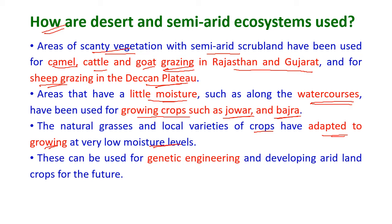This condition — where local grasses and crops grow at very low moisture levels — can be used for genetic engineering to develop arid land crops for the future.